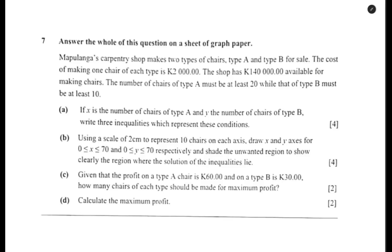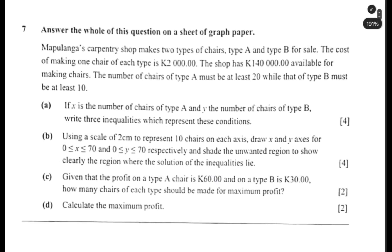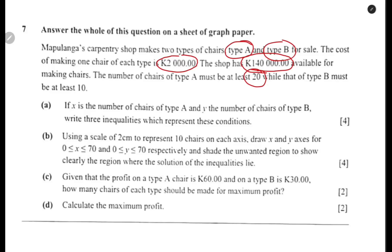So how do you answer this question? This is the one that came in 2024. So Maplanga's carpentry shop makes two types of chairs — type A and type B — for sale. The cost of making one chair is 2,000. The shop has 140,000 available for making chairs. The number of chairs for type A must be at least 20, and that of type B must be at least 10.